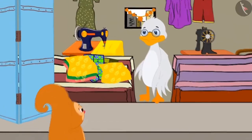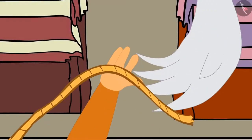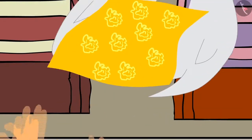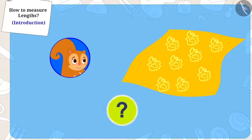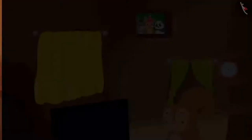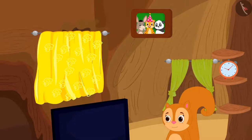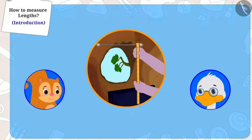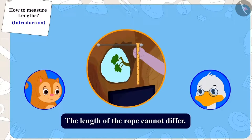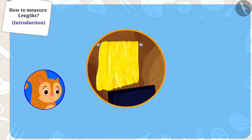Chanda again went to uncle's shop and this time bought a cloth as long as the length of the rope with which Appu had measured the window. This time when Chanda hung the cloth on her window, it was the exact length of her window. Appu had measured the length of the window with the help of a rope, and because the length of the rope cannot differ, uncle's and Chanda's measurement became exactly the same. And Chanda found a curtain that was the right measurement for her window.